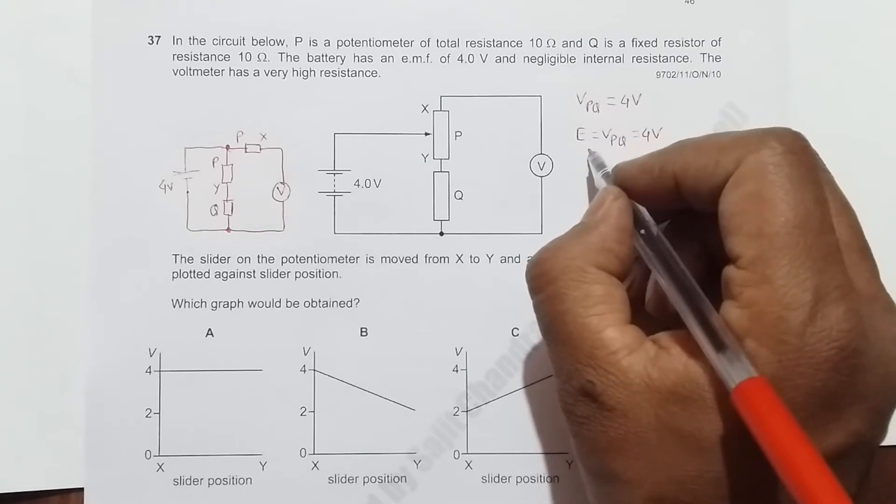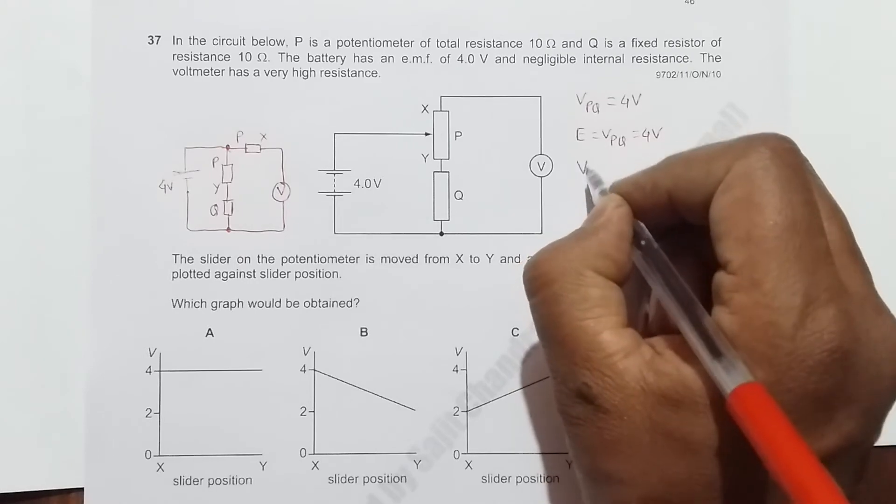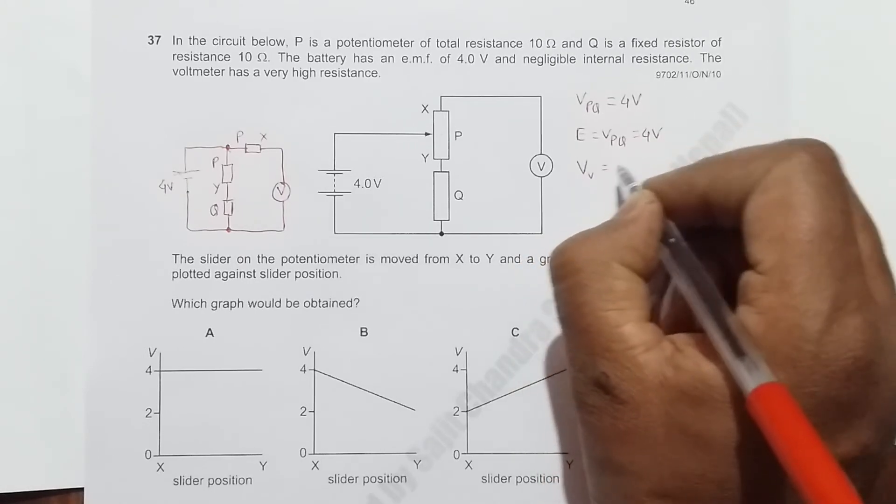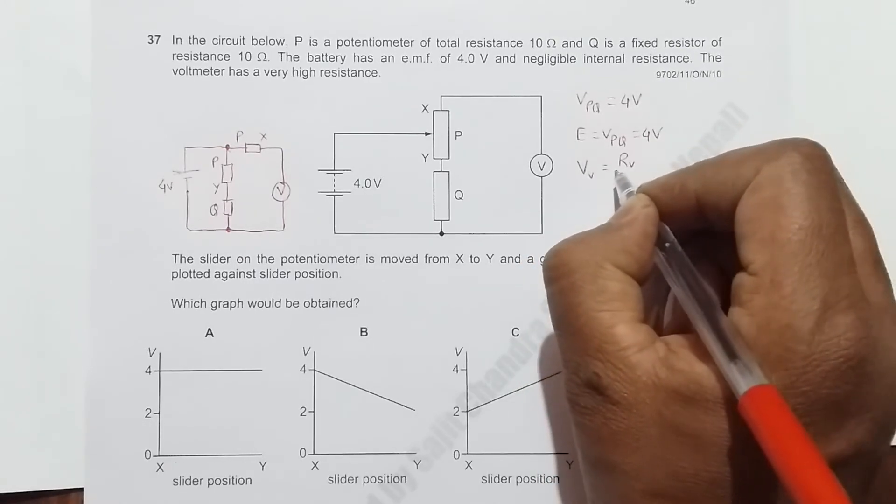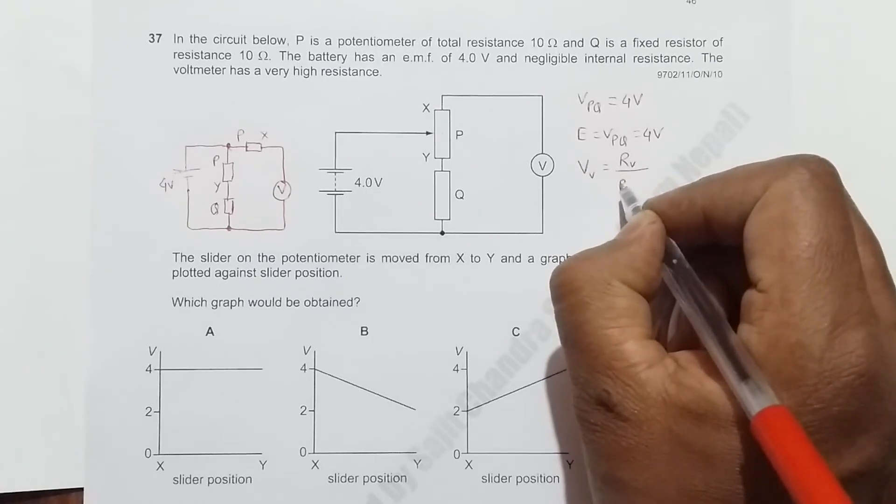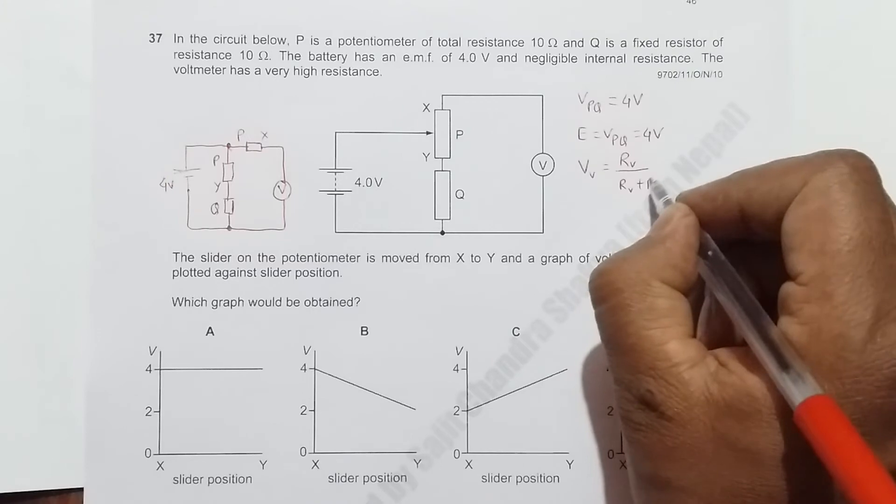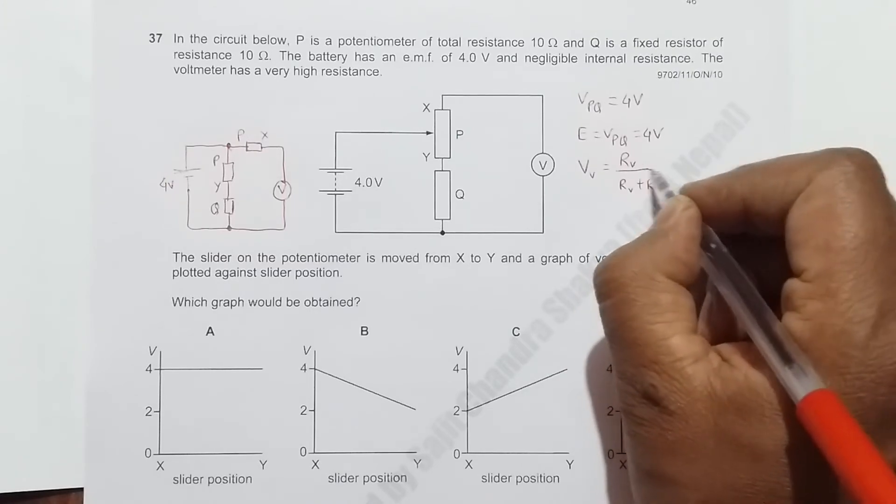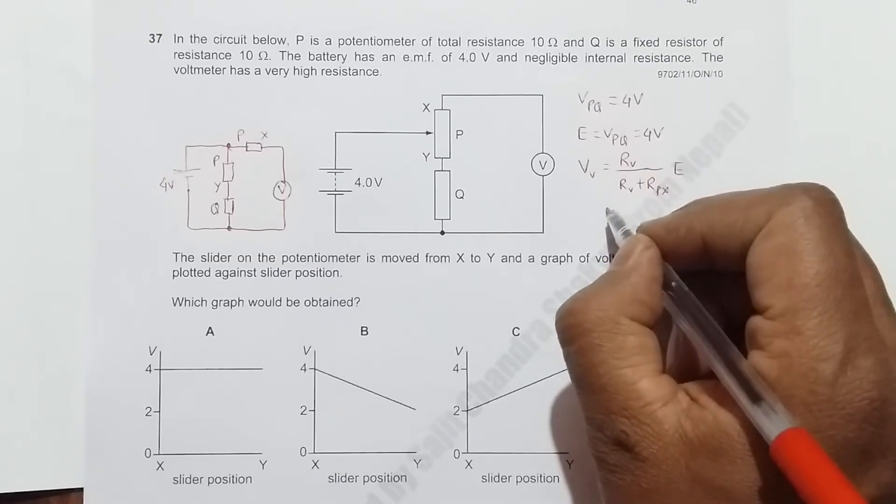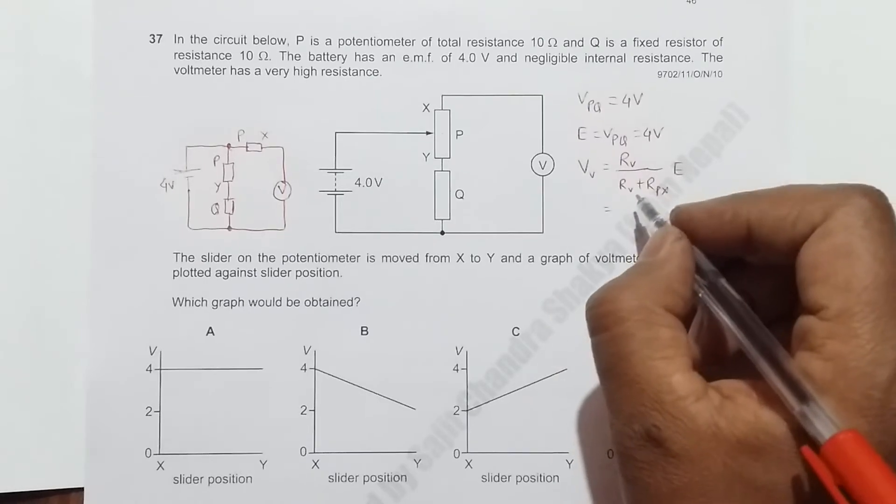The reading given by the voltmeter will be V equals R_V divided by (R_V plus R_PX) times E. R_V is very high, which means it is almost infinite.